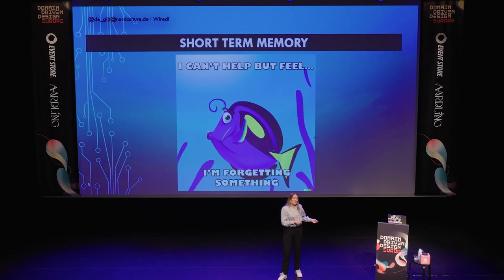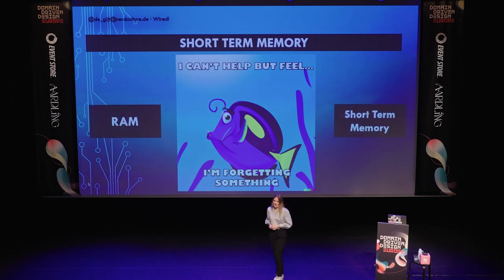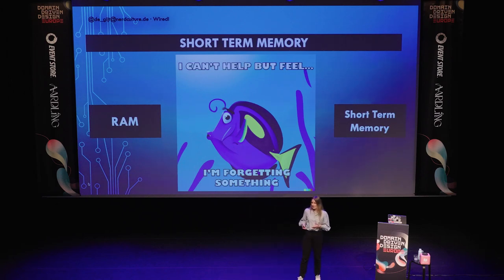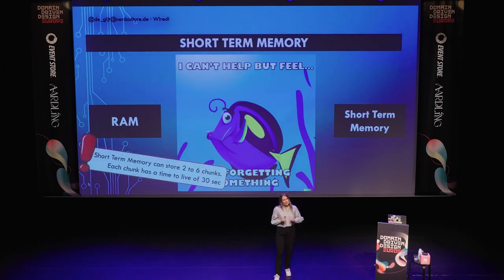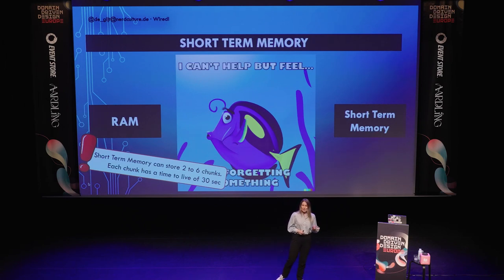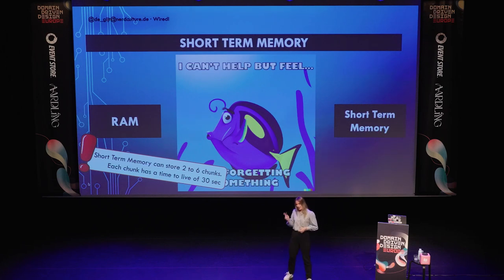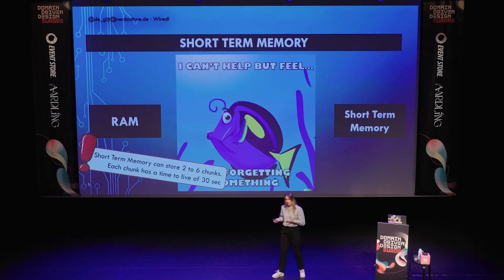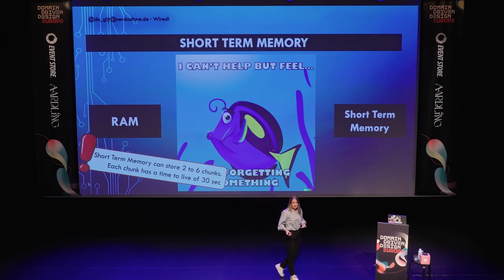The short-term memory can be compared to a RAM — a small storage place where you can store a limited amount of data for a limited amount of time. A short-term memory can only hold two to six chunks at a time, with every chunk having a time to live of about 30 seconds. That is not very long. Research from the 1950s believed chunks were up to five to nine, but recent research shows it's actually even less. So we need to be efficient with how we use this data.